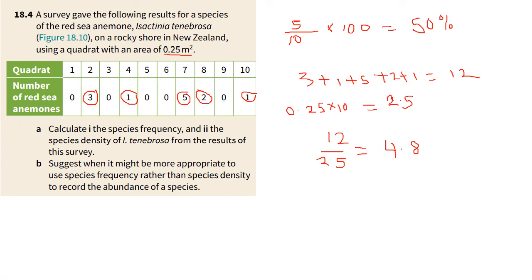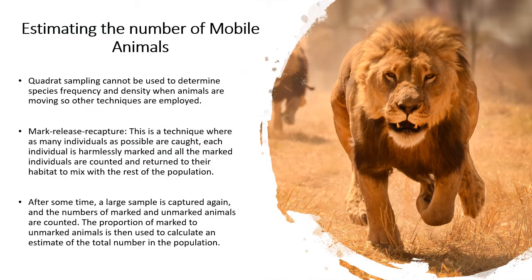It would be more appropriate to use species frequency than density when you're trying to predict the likelihood of finding a particular species in a certain area. Now, if you're dealing with mobile animals — for example, if we were sampling lions — there's no way we can fit a quadrat around a lion, and there's also the issue that lions move around. So we can't use quadrat sampling for animals that are highly mobile. You can use it for things like plants, but not necessarily for animals. For animals, what we often use is what is called mark release recapture.